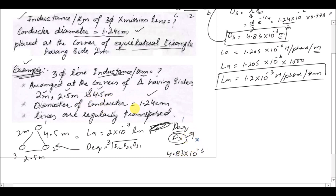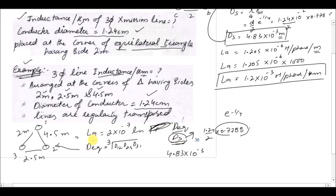Ds is calculated from the conductor diameter: radius = 1.24 / 2, multiplied by 0.778 (which is e^(−1/4)). We always use the fictitious radius when calculating inductance. So Ds = 4.83 × 10⁻³ meters.